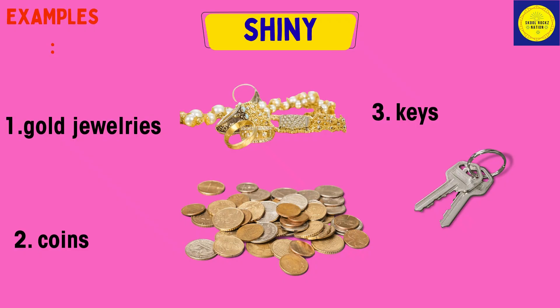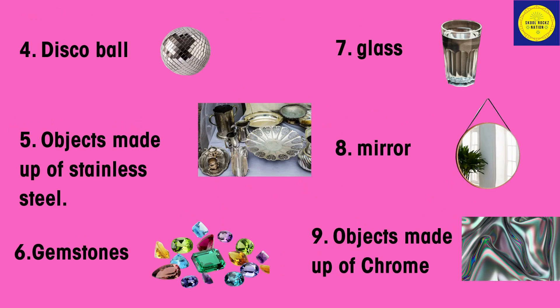Examples of shiny objects: gold jewelry, coins, keys, disco ball, objects made of stainless steel, gemstones, glass, mirror, objects made of chrome.